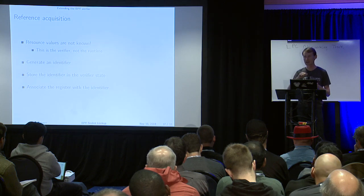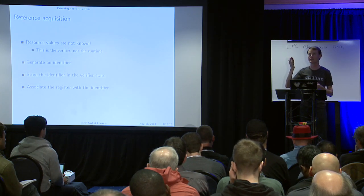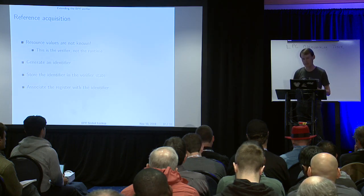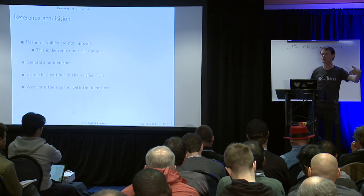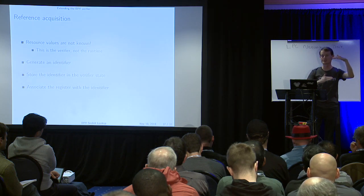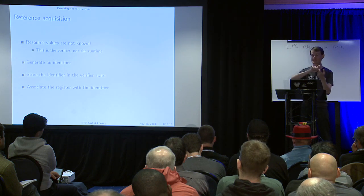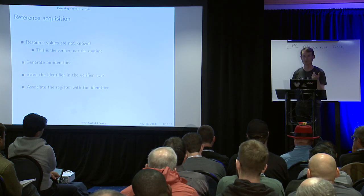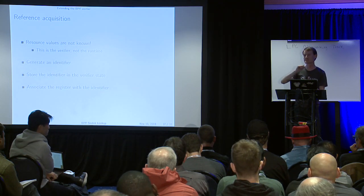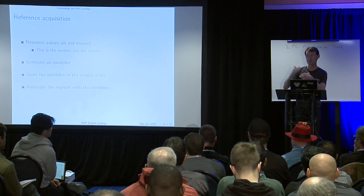How do we actually do this in the verifier? There's the resource acquisition step, the step where you're holding the resource, ensuring that use is valid, and then the release. We don't actually have references to sockets during verification - we're statically analyzing the steps through the BPF program. So through a particular path that takes a reference to a socket, we generate a unique identifier for that particular socket lookup. If you have multiple socket lookups, each gets an identifier associated with the instruction where it returns the pointer. We store this in verifier state and at the end of verification, we ensure no references are still being held.